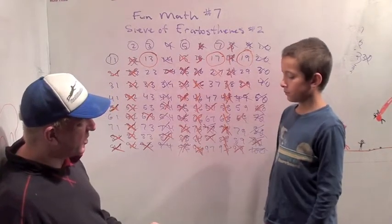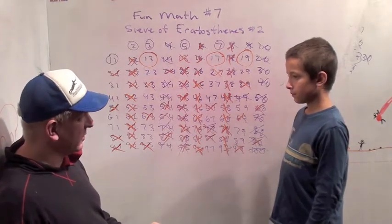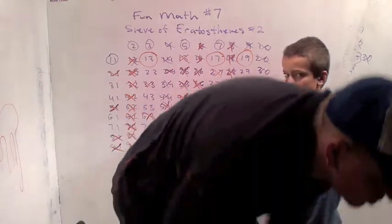This is why people like the Sieve of Eratosthenes. It tells you prime numbers pretty quickly, but there are other ways to get prime numbers even faster than this that we'll probably learn a little bit about. Okay? Good job on Sieve of Eratosthenes number two.